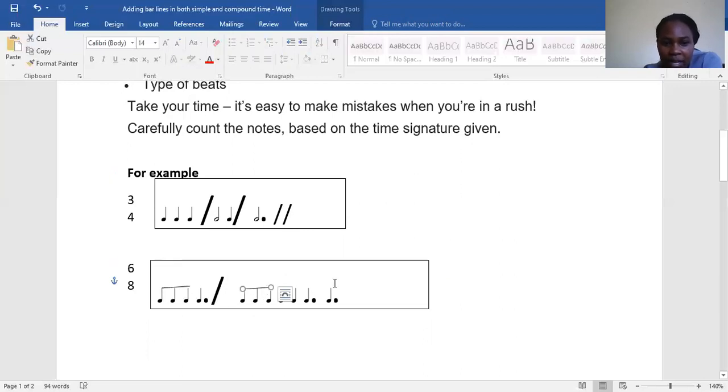I'll continue adding bar lines. These are three quavers plus this crotchet here, it makes four. Plus the crotchet here has two, so three, four, plus this two is going to make six. So I'll have my bar line there.